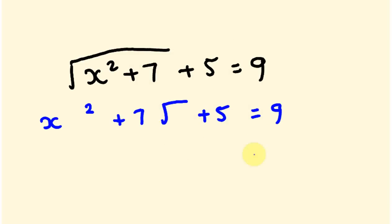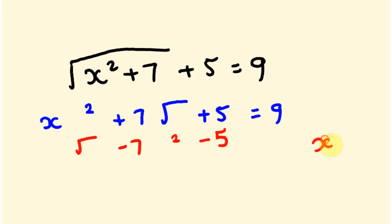Now we do the opposite in reverse. Starting from 9, we subtract 5, then the opposite of square root is to square, then we subtract 7, then we take the square root. So: 9 − 5 = 4, 4² = 16, 16 − 7 = 9, √9 = 3. So x = 3. Let's check: 3² = 9, plus 7 = 16, √16 = 4, plus 5 = 9. Correct!